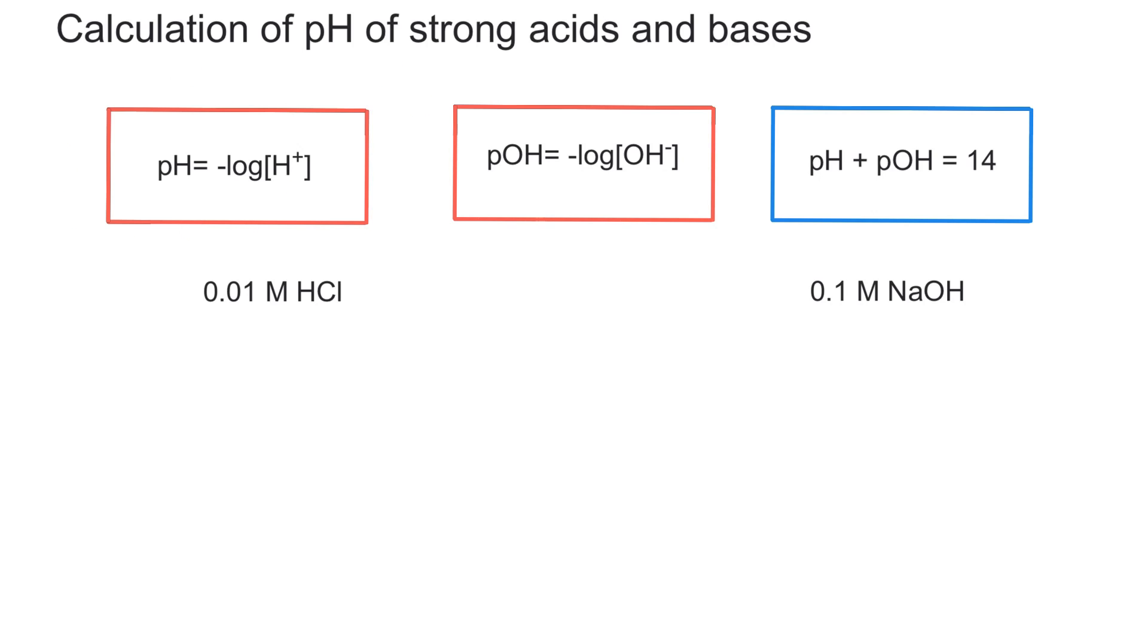Right here, you can see the two formulas you need to know to determine the pH and the pOH of a strong acid and a strong base. The pH is equal to negative log of base 10 of the concentration of hydrogen ions. The pOH is the negative log base 10 of the concentration of hydroxide ions, OH-. And the addition of the pH and the pOH will always be equal to 14 for the same compound.